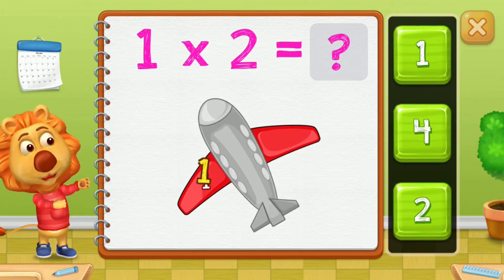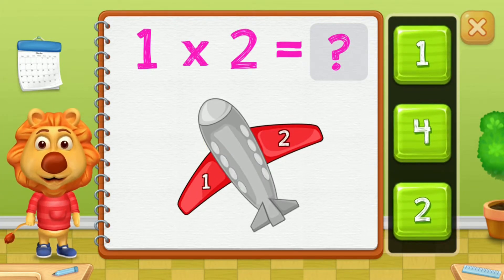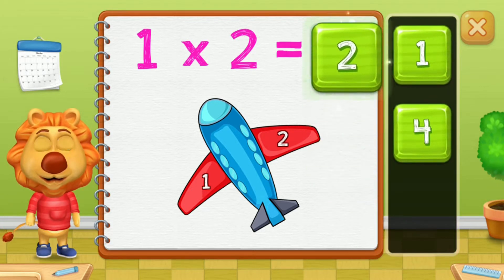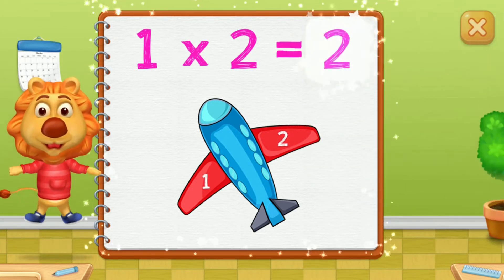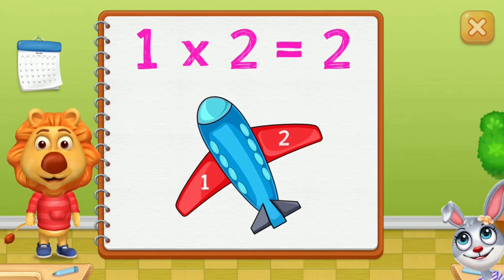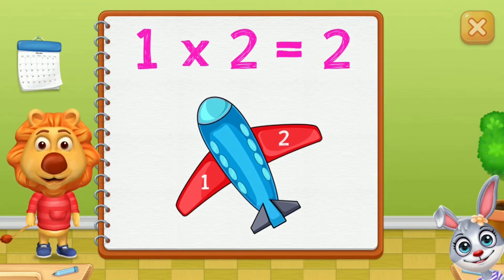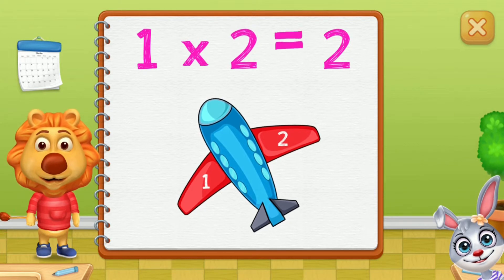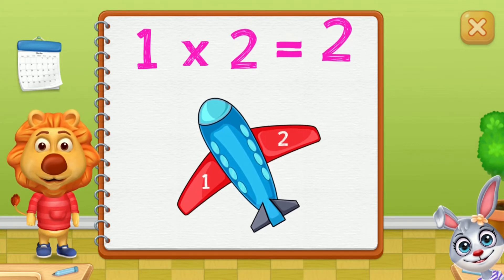One, two, three. One group of 2 equals 2.